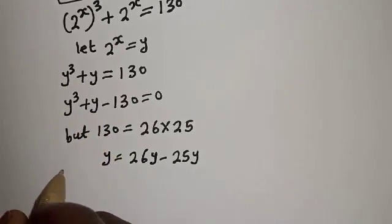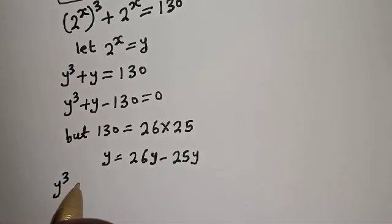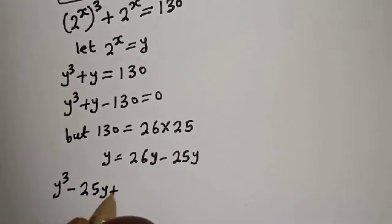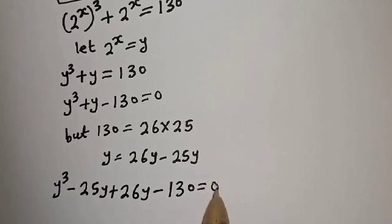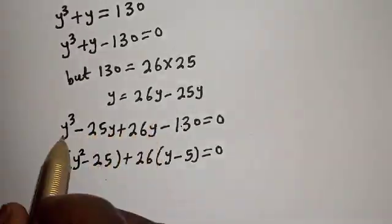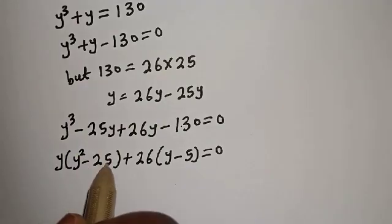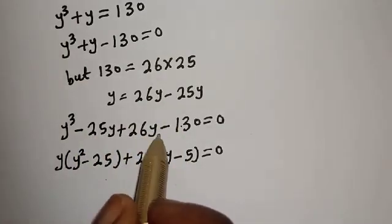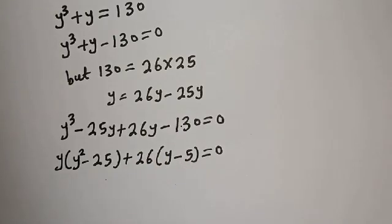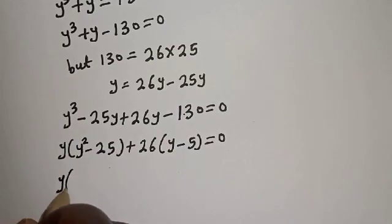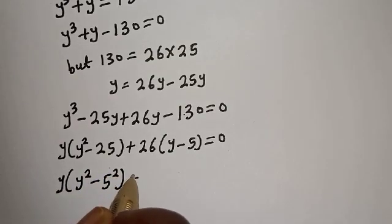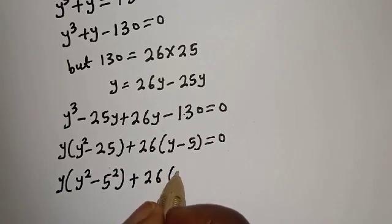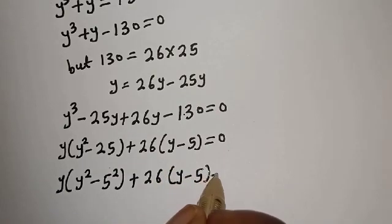Let's substitute into this: y raised to power 3 plus 26y minus 25y minus 130 is equal to 0. From here, y is common. We have y bracket y squared minus 25, plus 26 bracket y minus 5, equals 0. And y bracket y squared minus 25 can be written with 5 squared, plus 26 bracket y minus 5 is equal to 0.